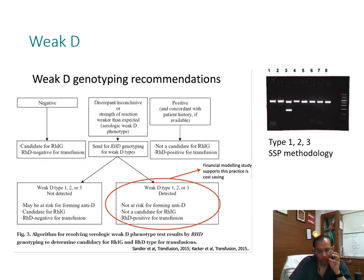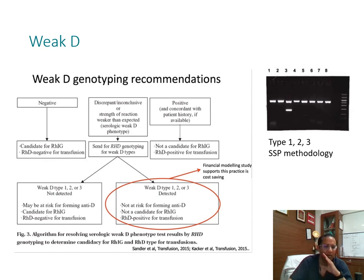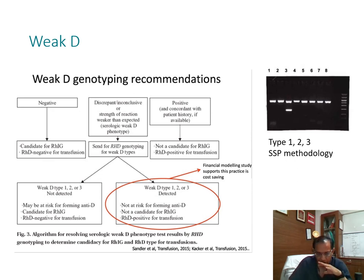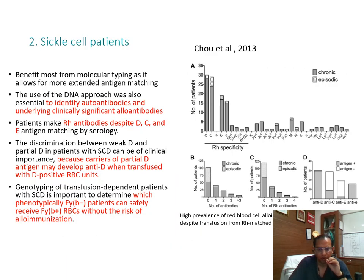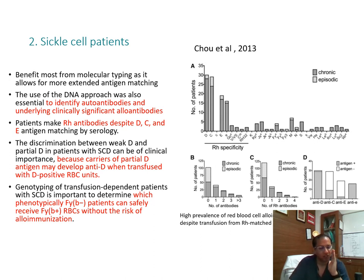The algorithm for weak D genotyping: when a female is RhD-negative, she is a candidate for RhIG and should receive RhD-negative blood for transfusion. When she is RhD-positive, she is not a candidate for RhIG. The problem arises when there is a discrepant, inconclusive, or weaker-than-expected serological result — the weak D phenotype. In that case, send for RhD genotyping to determine if she is type 1, 2, or 3. If she is type 1, 2, or 3, she is considered RhD-positive; if not, she may be considered RhD-negative and may require RhoGAM.